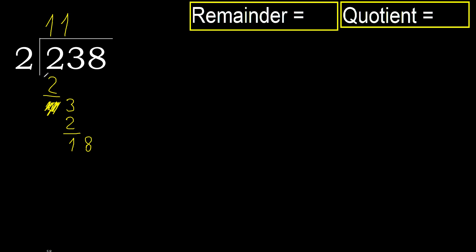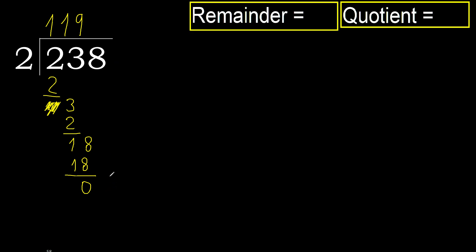18. 2 multiplied by 9 is 18. 18 is not greater. Subtract. 0. Next. There is no number, therefore, finish it.